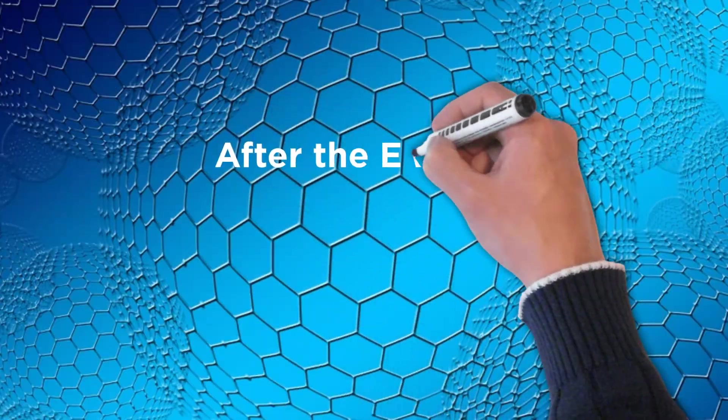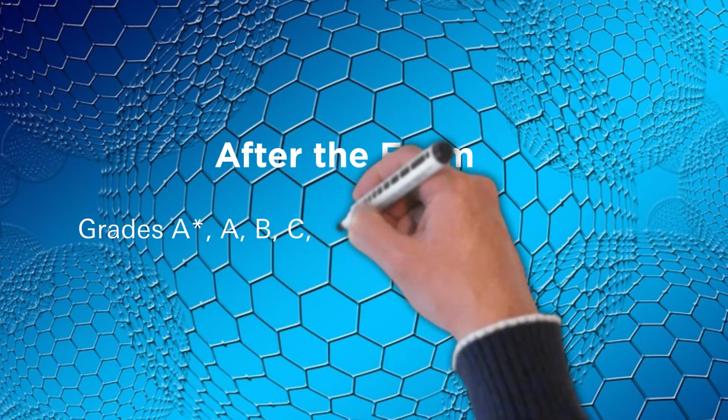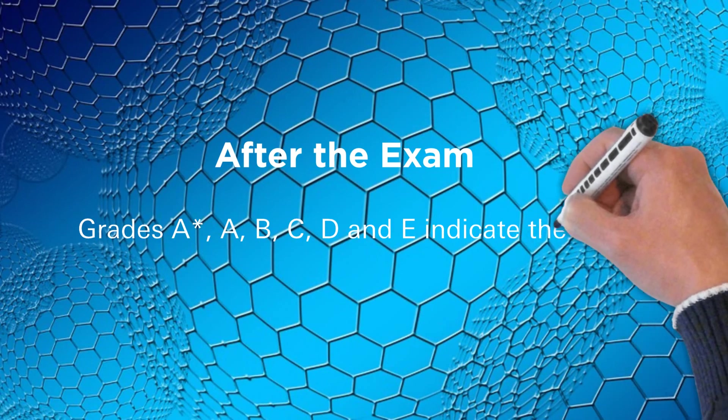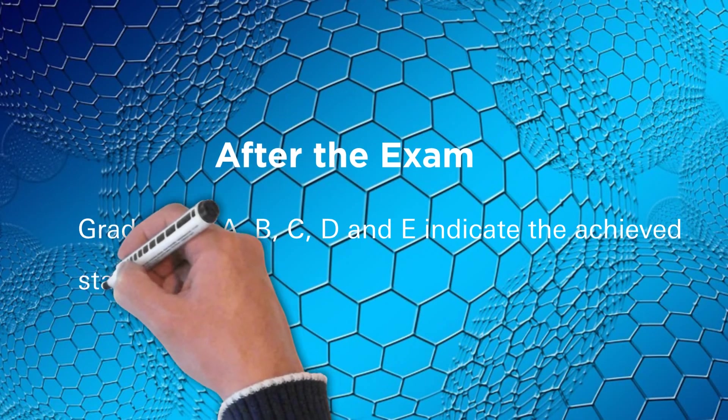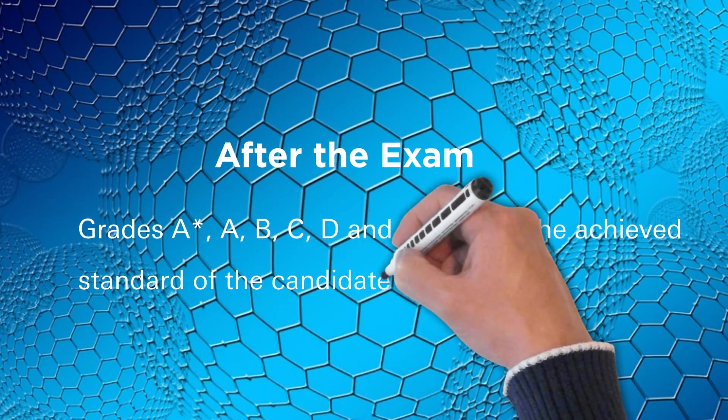After the exam, grades A*, A, B, C, D, and E indicate the achieved standard of the candidate in the exams of O-Level Chemistry 5070, whereas A* is highest and E is lowest.